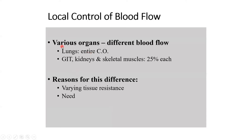Various organs in the body do not have uniform blood flow. We've discussed that circulation is arranged in parallel, with the heart arranged in series. Circulation being arranged in parallel means that every organ gets to choose how much blood flow it receives, based on various factors.